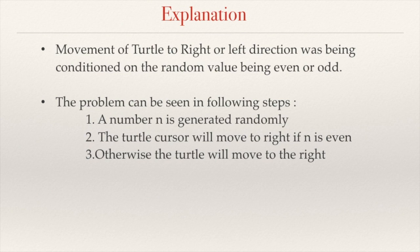The previous code example was a perfect example of a conditional program where the direction of the turtle — to the right or left — is controlled by the random number generator. If the random number is even, the turtle was moved to its right; else it was moved to the left. Here we observe two branches of execution. This type of program situation, where we have more than one path of execution out of which one is chosen based on a specific condition, is known as a conditional program.